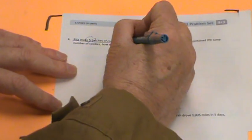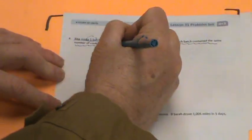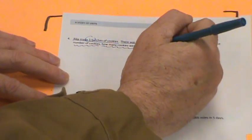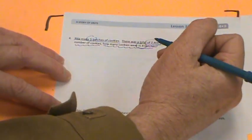Let's go ahead and flip the page over. Got two more to do. Rita made five batches of cookies. There were a total of 2,400 cookies. If each batch contained the same number of cookies, how many cookies were in four batches? This one's kind of tough. What we don't know is the group size.